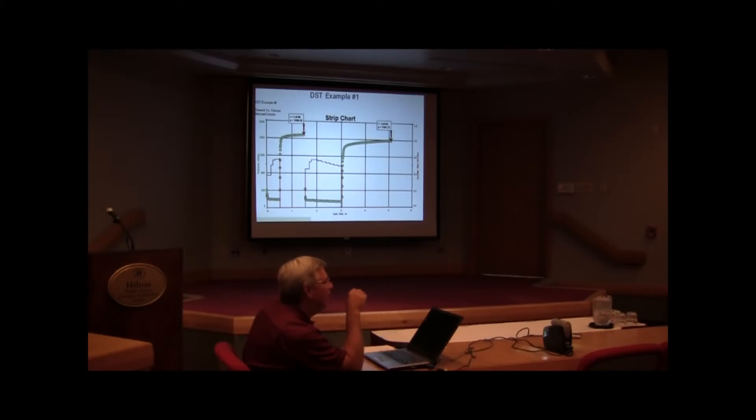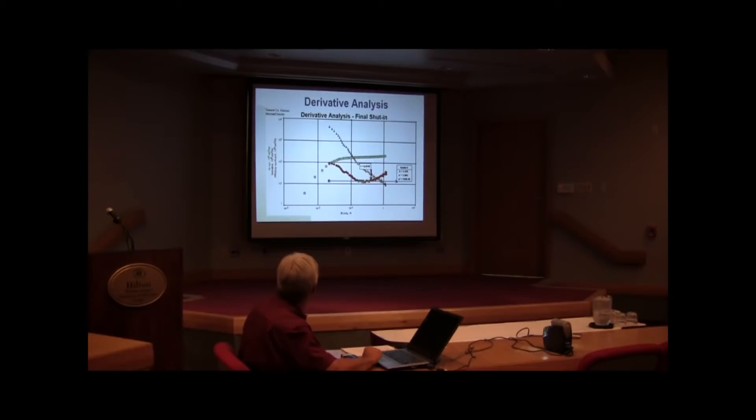They give me a pressure reading every three or four minutes, so I can only put it in as a stair-step function. Now here we get to the derivative. We've got our different sections of the derivative. We've got this piece over here that's the wellbore storage piece. We've got our transient portion here. These two don't really tell us much about the reservoir.